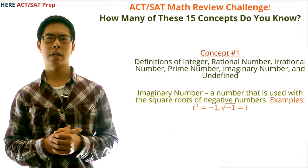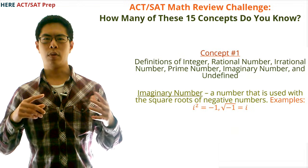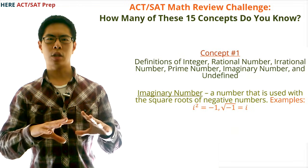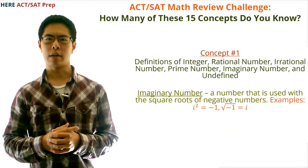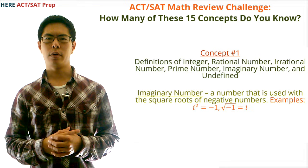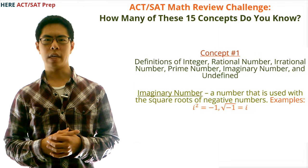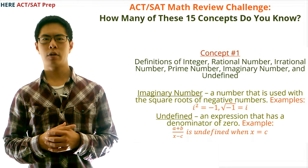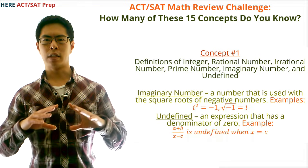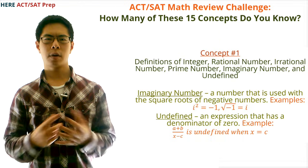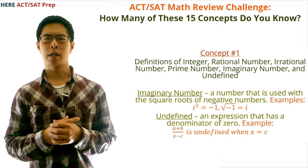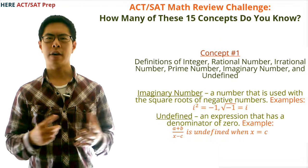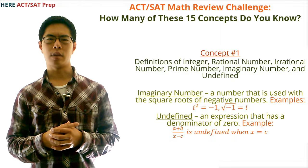Fifth, an imaginary number is a number that is used with the square roots of negative numbers. A rule is that i squared equals negative one. For example, the square root of negative one would equal i. Sixth, undefined refers to an expression that has a denominator of zero. For example, the function (a + b) / (x − c) is undefined when x equals c.